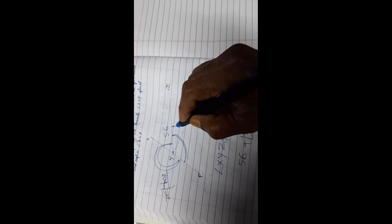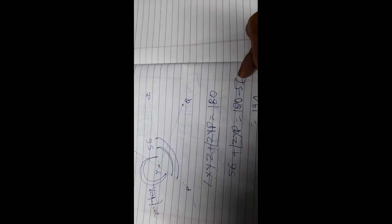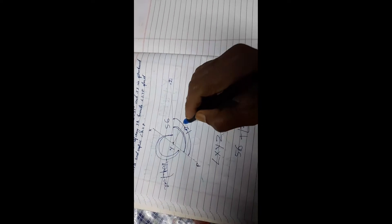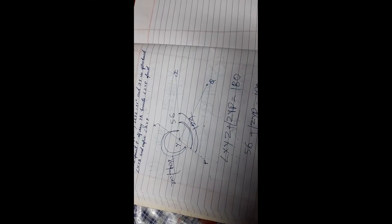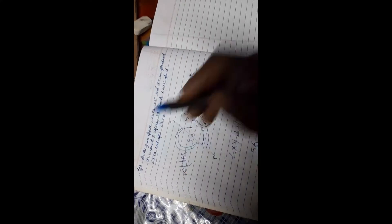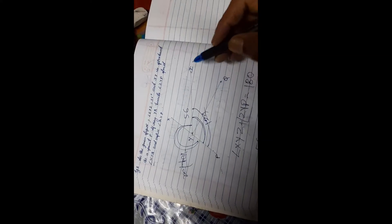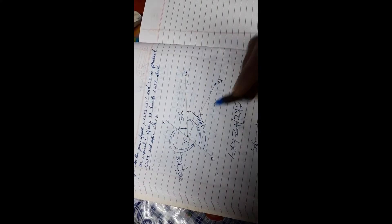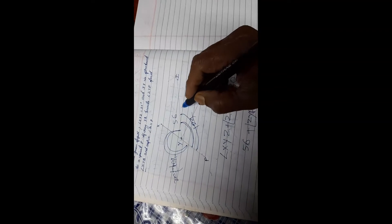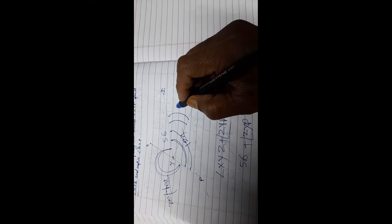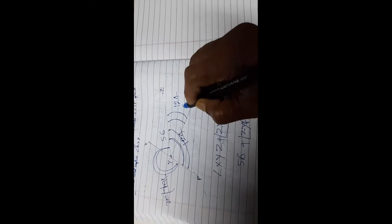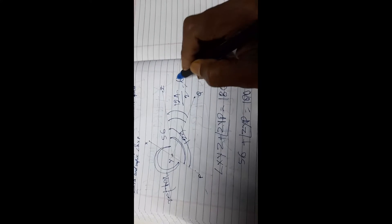YQ bisects ZYP, so it will be 124 divided by 2. The value of this angle will be 62 degrees because this is the bisector, so 124 by 2 equals 62 degrees.